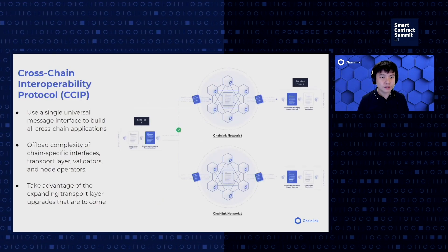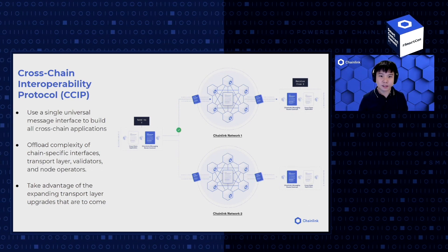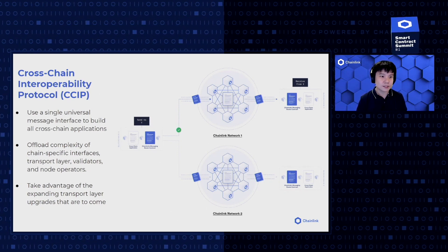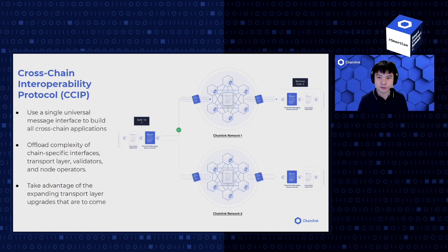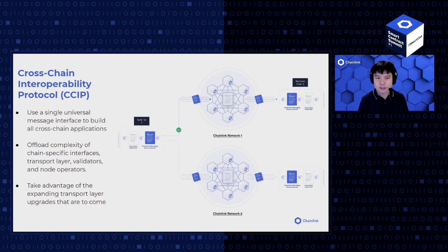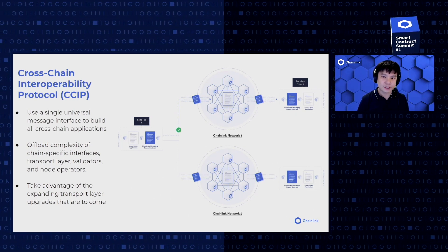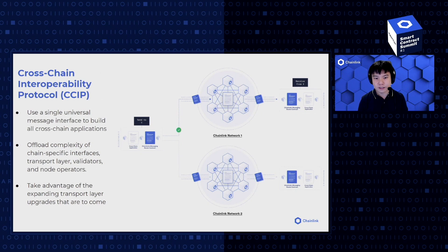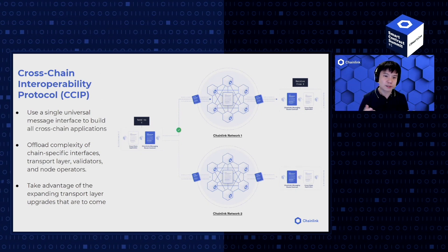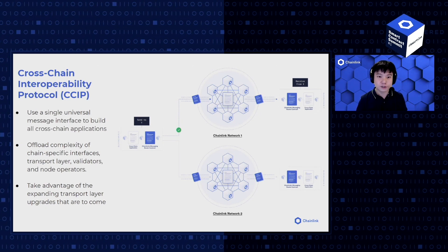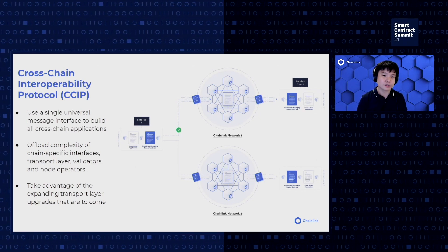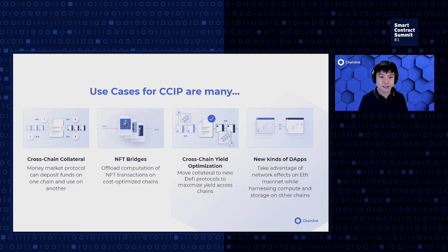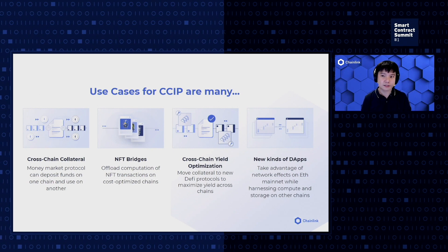With CCIP, developers can use a single universal message interface to communicate across multiple blockchains for the first time. At this abstraction layer, developers won't need to concern themselves with different bridge lane implementations, complexity of the transport layer, validators, node operators, and the underlying protocols. They can also take advantage of expanding transport layer upgrades and interoperable bridge lanes. Any compliant future bridge lane implementation on any blockchain could deliver messages to the router, which would then deliver it to the dApp contracts. I'm really excited to see what can be built on top of CCIP, as applications can effectively span multiple chains.